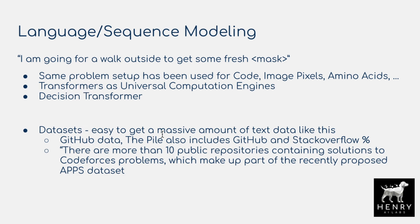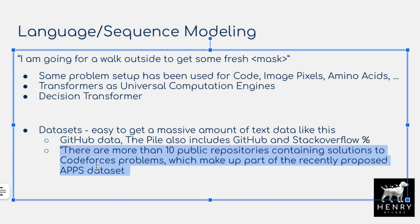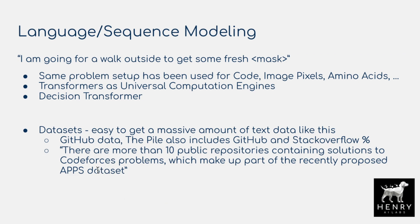It's easy to get massive amounts of text data and GitHub data. The pile from EleutherAI also includes percentages of GitHub and Stack Overflow data. As mentioned in the paper describing the GitHub dataset used to train Codex, there are more than 10 public repositories containing solutions to CodeForces problems — the Apps benchmarks. This is why they construct the HumanEval benchmark; they can't use Apps because they've seen that data in training.